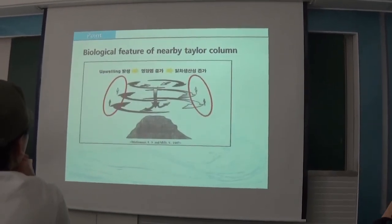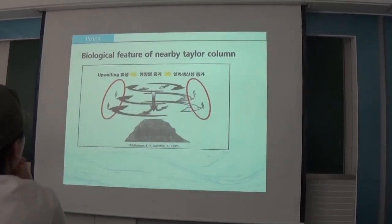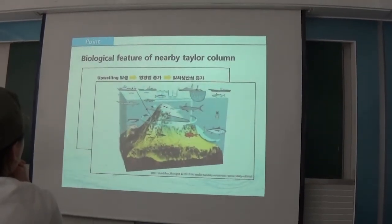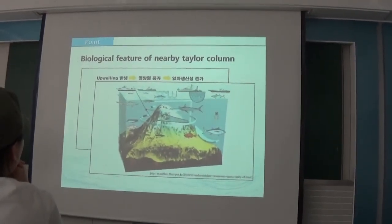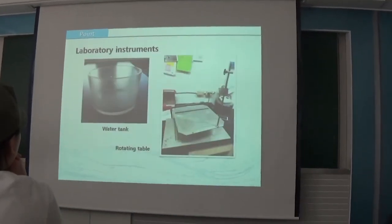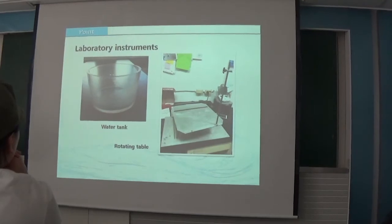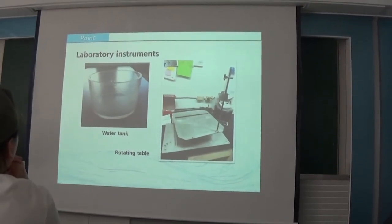What features exist in areas where Taylor columns happen? At that area, upwelling happens, so the surface nutrient concentration increases, so primary production also rises and then it gets rich in marine resources.